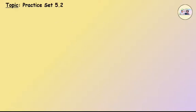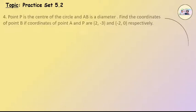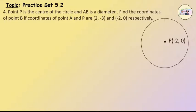Practice Set 5.2, Question number 4. Point P is the centre of the circle and AB is the diameter. Find the coordinates of point B if coordinates of A and P are (2, -3) and (-2, 0) respectively.